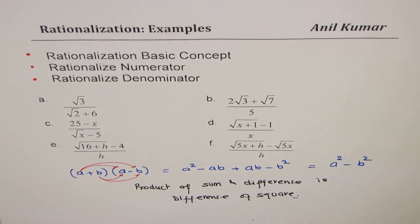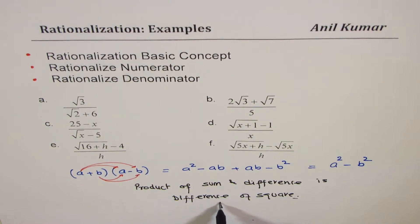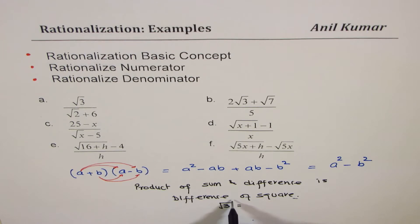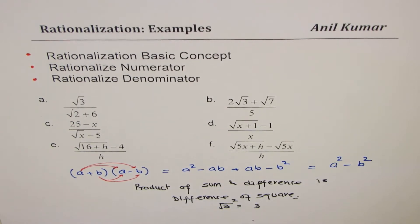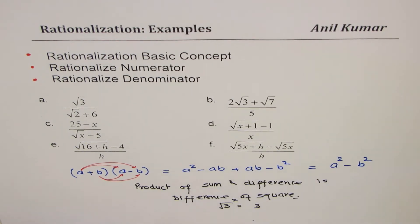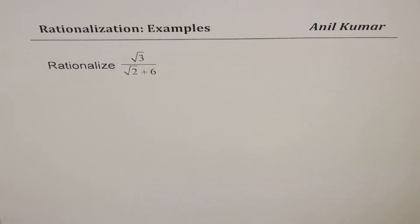That helps us because if I take square root of 3 and square it, I get just 3. So it helps me to change radicals to normal numbers to work with — that is how it can simplify a given expression. So now we are going to take these examples one by one and see how to rationalize.